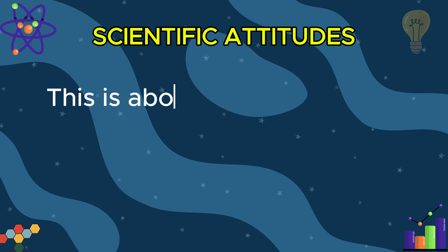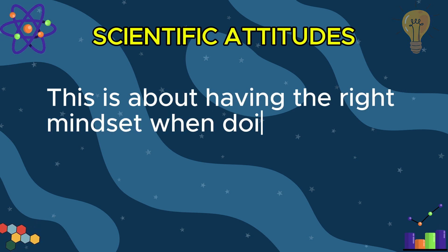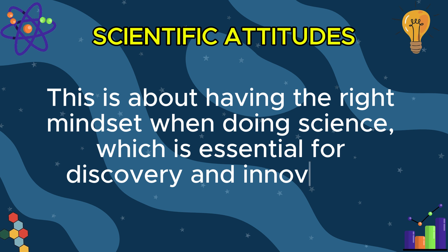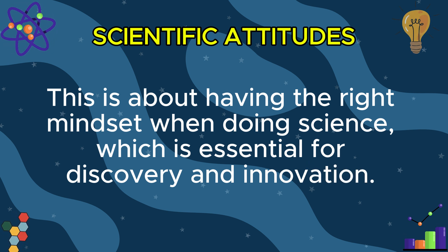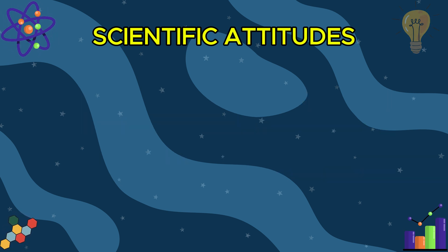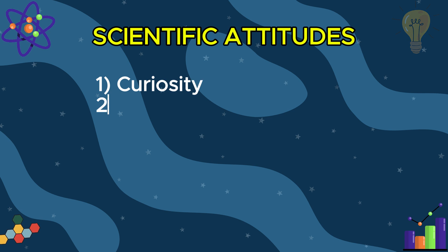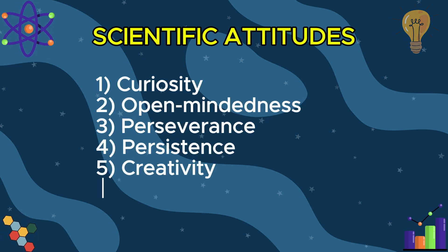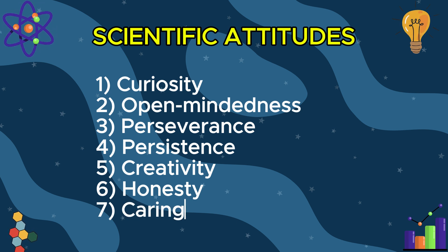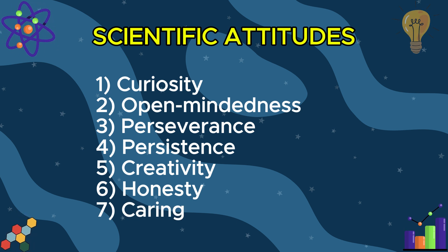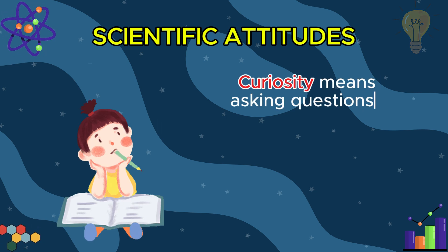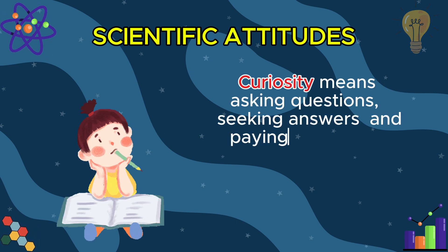Now, let's discuss scientific attitude. This is about having the right mindset when doing science, which is essential for discovery and innovation. Here are some examples of what a good scientific attitude looks like — you can practice these attitudes and become successful like Galileo, a famous scientist and mathematician. Curiosity means asking questions, seeking answers, and paying attention to the surroundings.